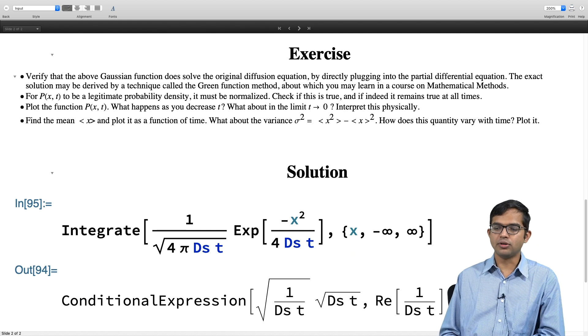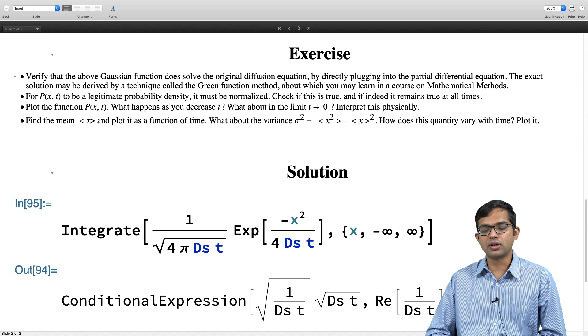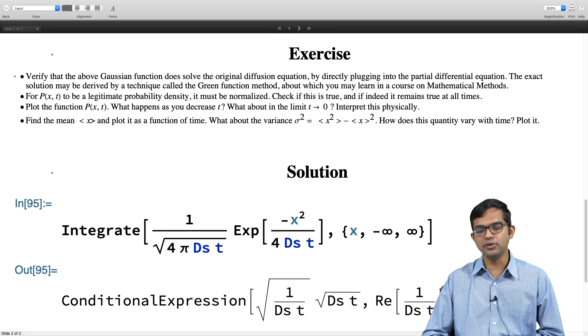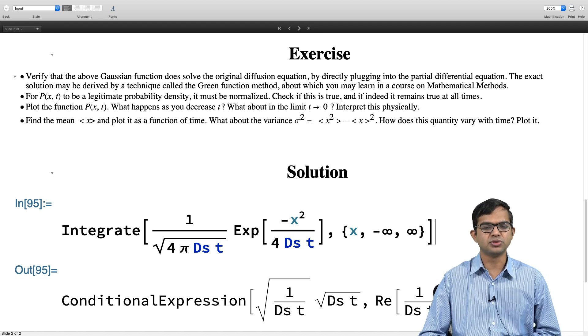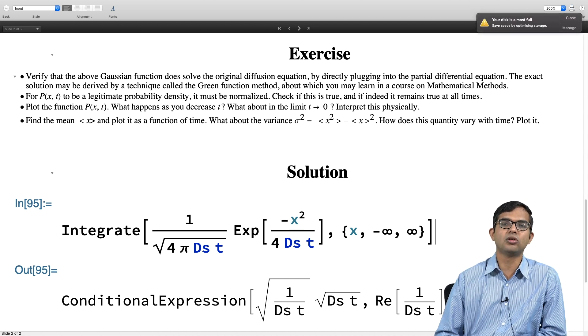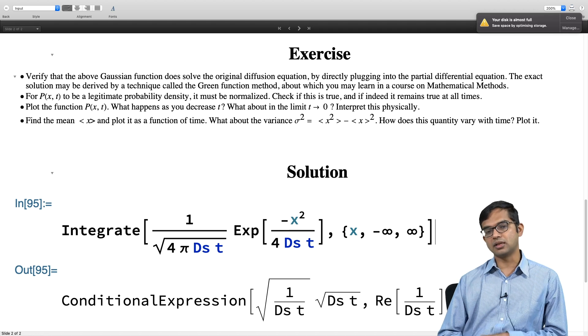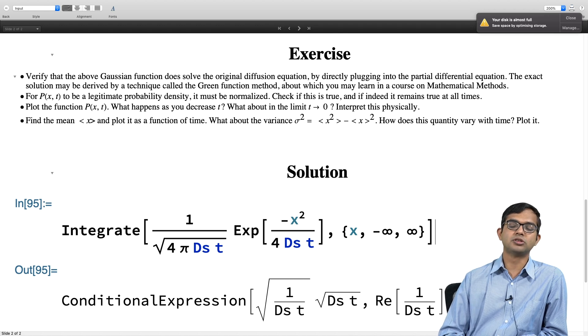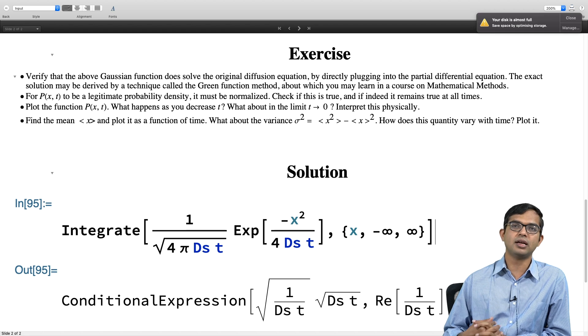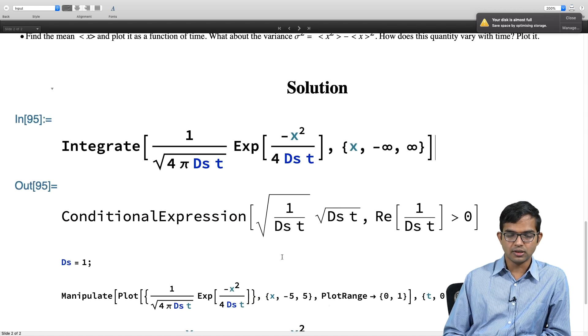If I hit shift enter for this integrate, then you will see it did complete the integration. You see this conditional expression. It is giving you the answer 1 over square root of ds times t times square root of dst, because Mathematica does not make any assumptions about what ds and t are. We know of course that both ds and t are real and positive. It makes no sense to think of a diffusion coefficient which is not positive or not real. For sure ds is positive and real, and also time, there is no negative time in this problem. We think of a random walker starts this motion at a certain time and that time is 0, and then as a function of time, how does this probability distribution vary? For sure, we know that both ds and t are real and positive, therefore real part of 1 over ds times t is definitely greater than 0, therefore this answer is actually nothing but 1. This is a reassuring result, which is what we already expect.